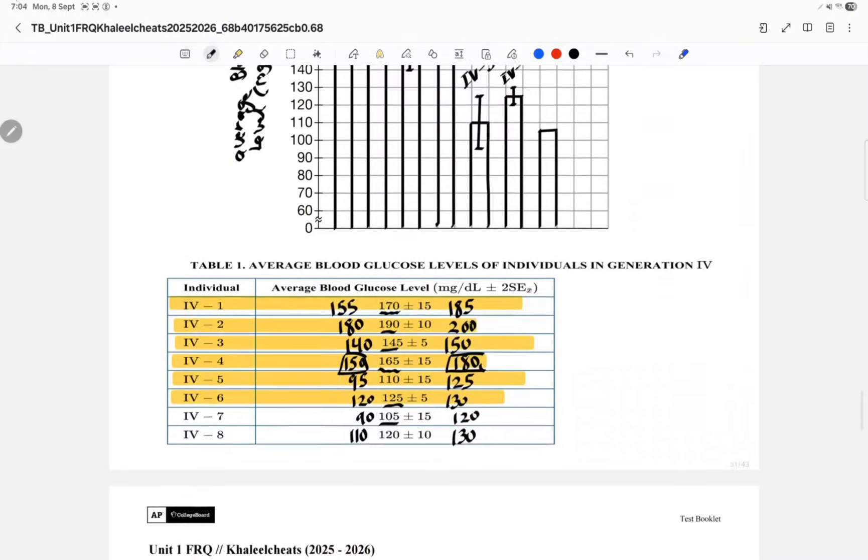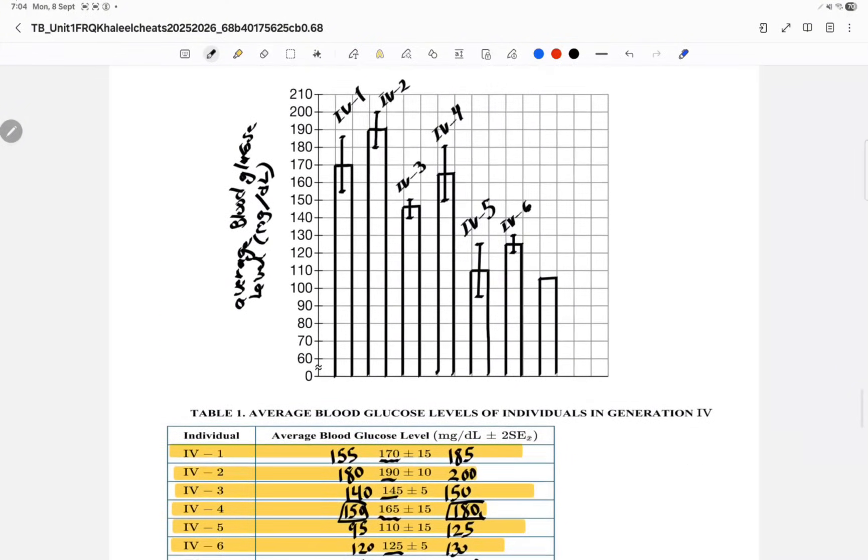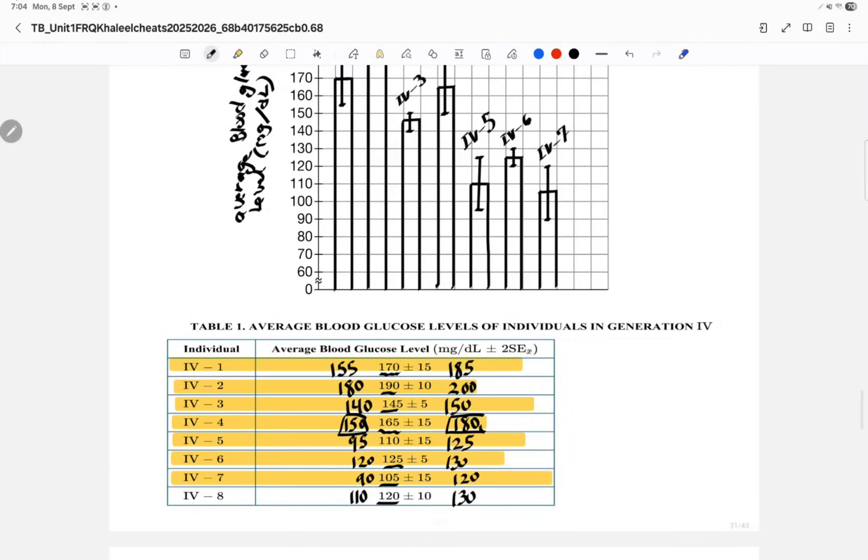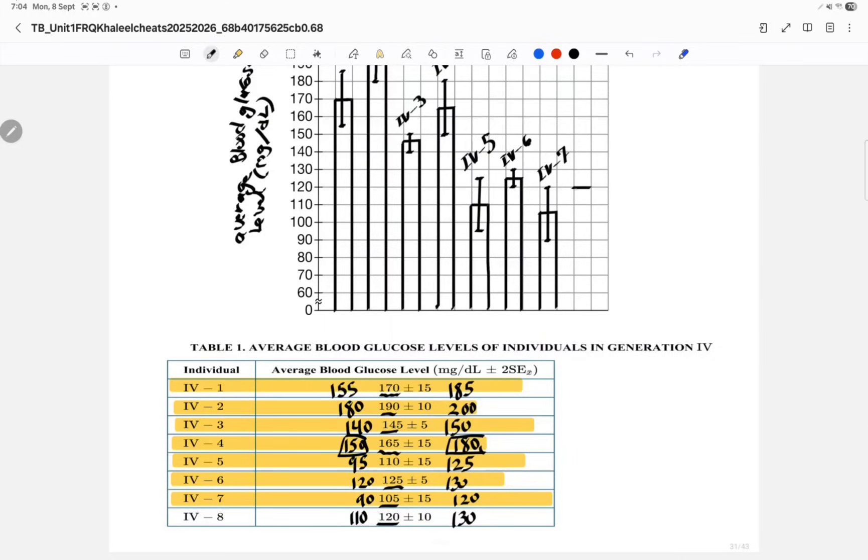Take care of the sixth row. Now IV7 at 105, which will be extending from 90 to 120. We also have IV8 at 120, that will be extending from 110 to 130. It's going to be IV8. Now on the x-axis you could say individual, because we did have the individuals. You can also say individual in generation four if you want.